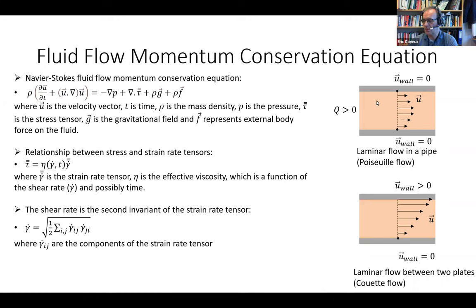If we have flow of fluid into a pipe, we have a differential pressure between the two ends and a volumetric flow rate across that. At a certain position along the pipe, for a cylindrical axisymmetric configuration, we have a fluid velocity field such that the velocity at the wall equals zero, increasing toward the axis of symmetry. That is laminar flow, called Poiseuille flow.